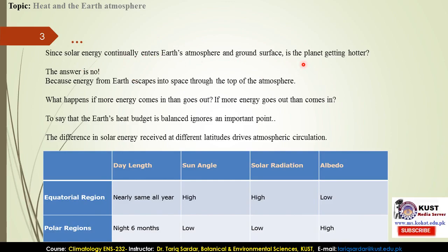If solar energy keeps coming in, the planet will get hotter and hotter — you might think it would literally boil. But the answer is no. Because energy from the Earth escapes into space through the top of the atmosphere. The atmospheric layers reflect back a major chunk of the heat energy coming toward the Earth's surface, regulating the heat balance.